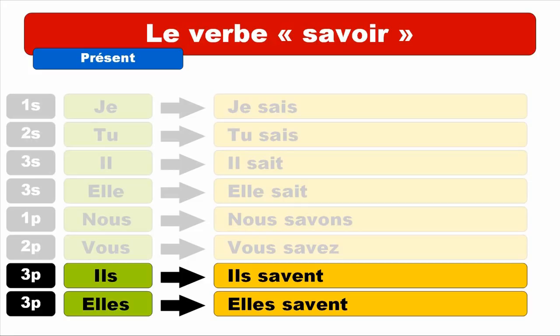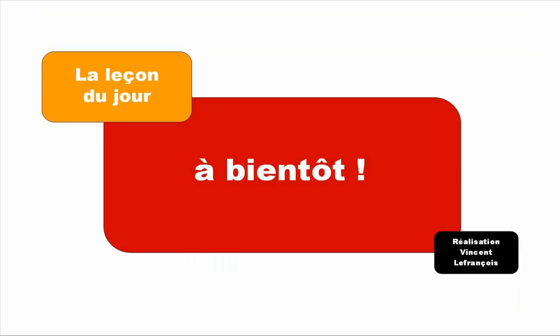So let's see again: JE SAIS, TU SAIS, IL SAIT, ELLE SAIT, NOUS SAVONS, VOUS SAVEZ, ILS SAVENT, ELLES SAVENT. I do hope that now you know this verb — if it's not really clear, don't be afraid to watch the video one more time. Have a nice day. Bye-bye.